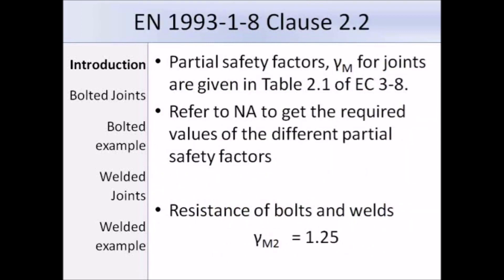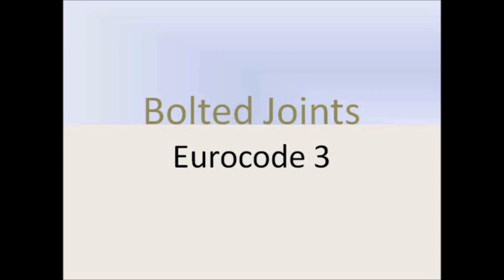I have already touched upon the partial factors for joints and said that they are relatively large. In the case of bolts and welds, the value is 1.25. This section is now going to deal specifically with bolted joints.